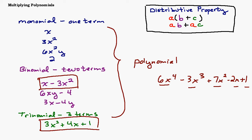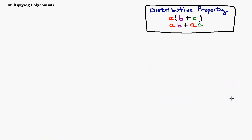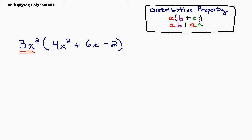Let's look at an example: take the monomial 3x squared and multiply it by the trinomial 4x squared plus 6x minus 2. We're going to use the distributive property — the 3x squared is our 'a' value, and we multiply it by each term inside the parentheses. You can think of little arrows: multiply a times b, multiply a times c. So we take 3x squared times 4x squared, then 3x squared times 6x, then 3x squared times 2.